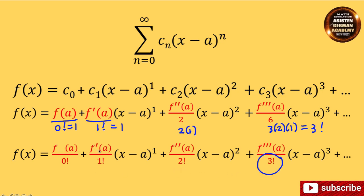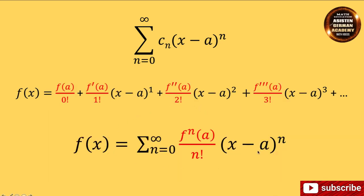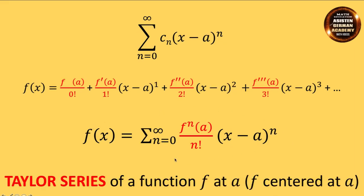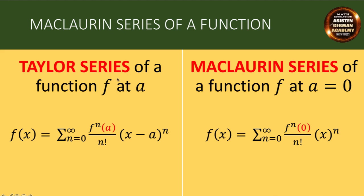We can now write the general formula. The Taylor series of a function centered at A is the summation from n equals 0 to infinity of F to the nth derivative evaluated at A, divided by n factorial, times the quantity x minus A raised to the n. This series is what is programmed into calculators, which is why we can expand sine of x. A special case of the Taylor series is when A equals 0, meaning the function is centered at 0.